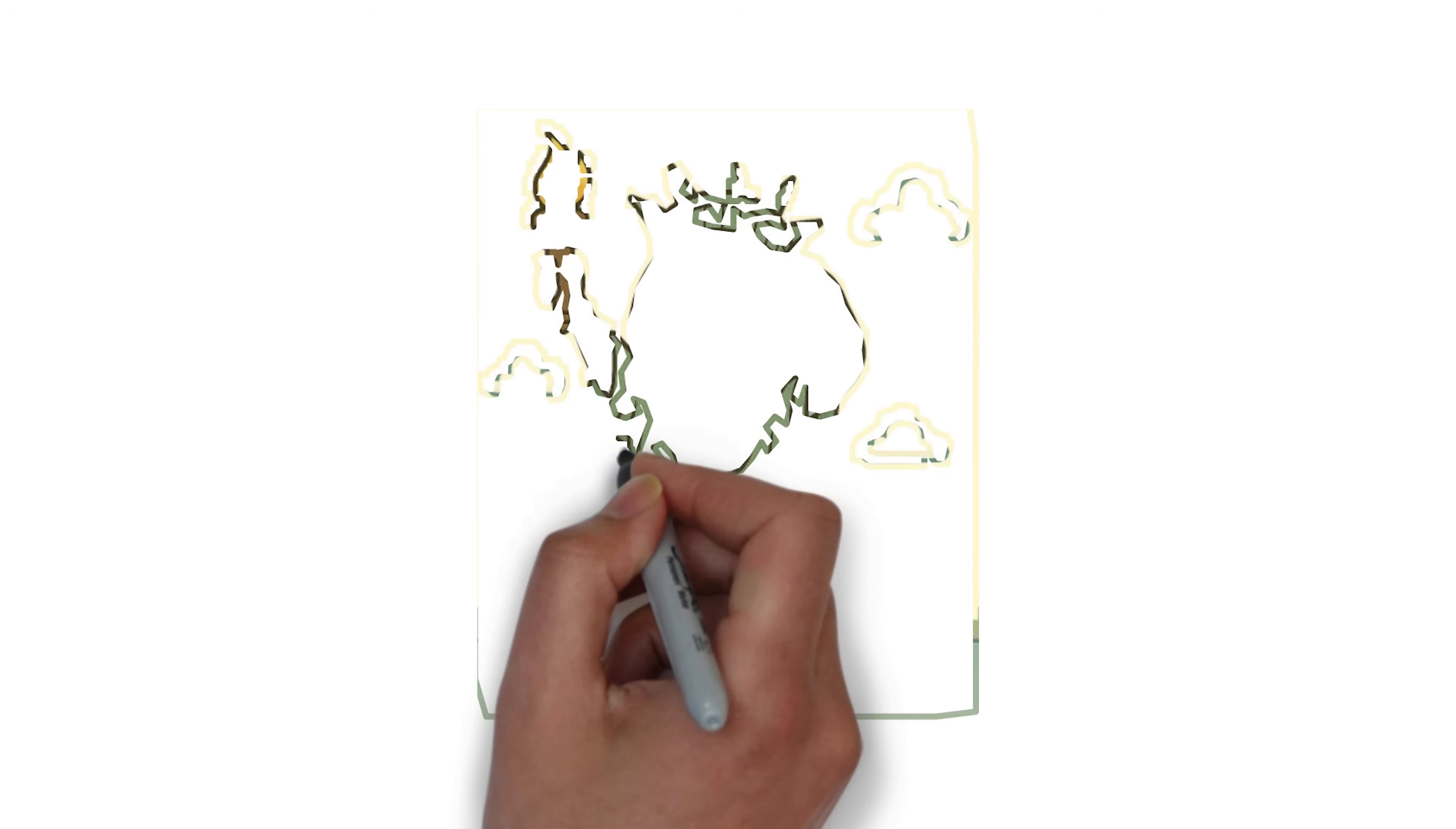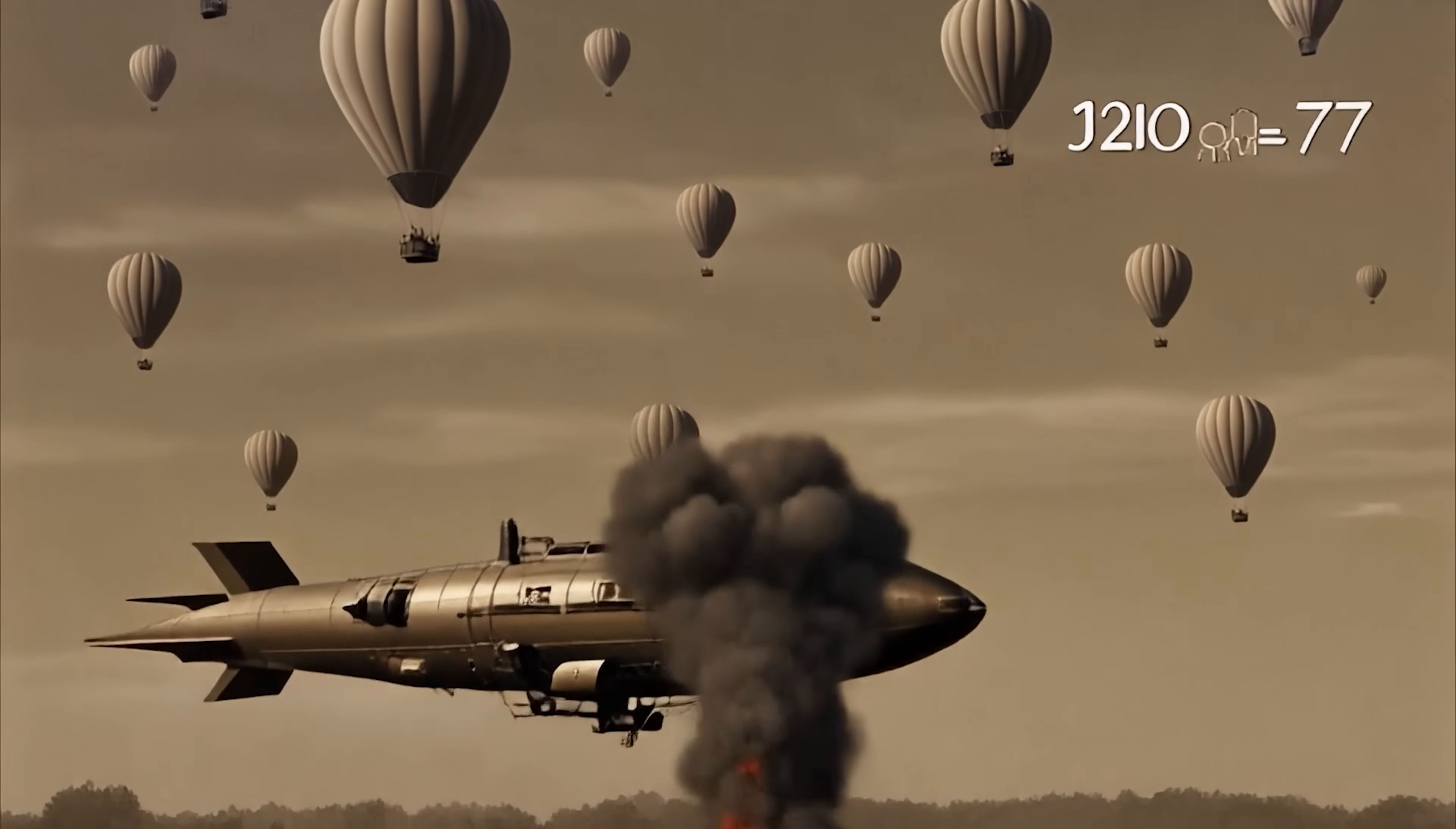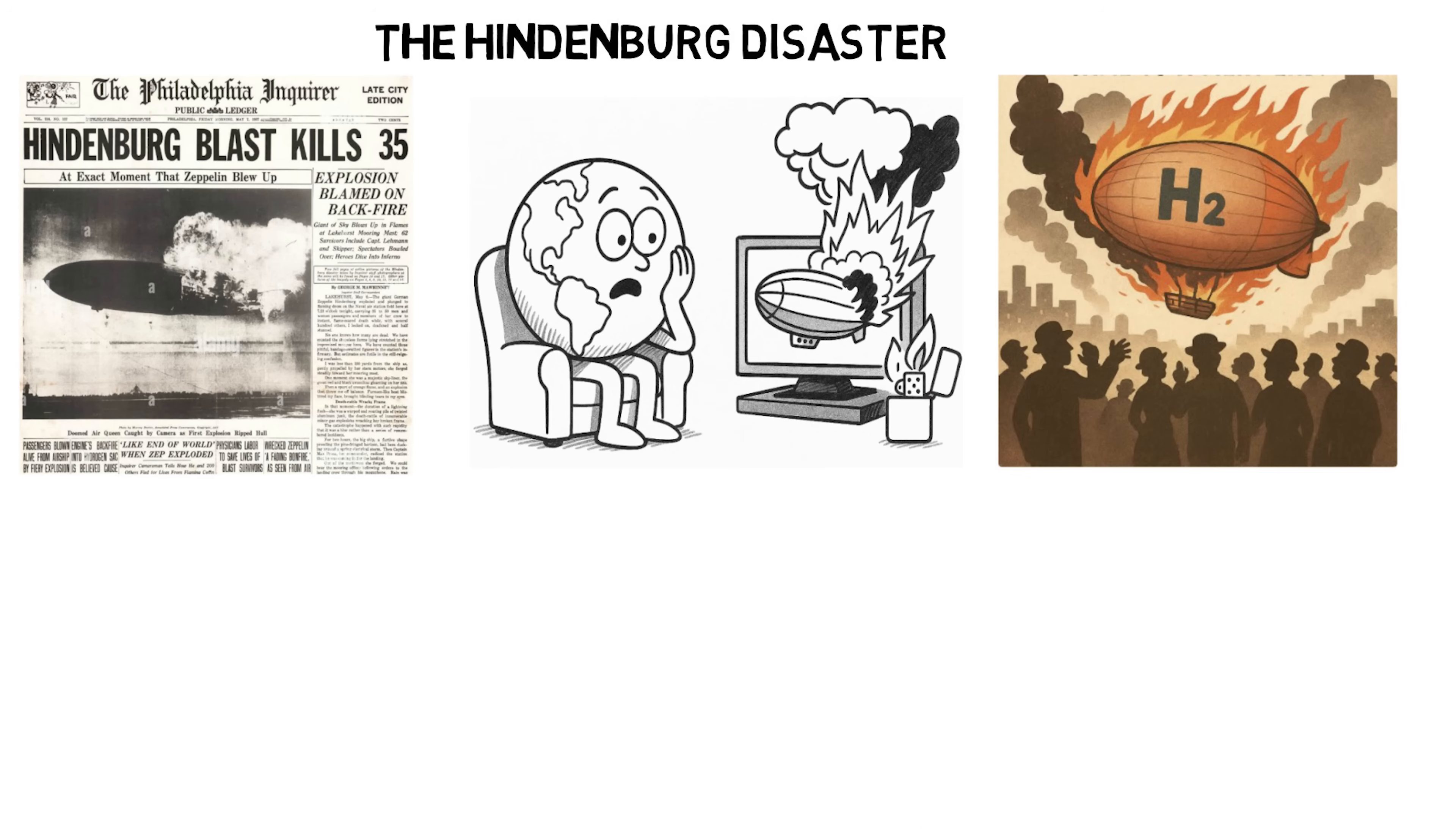Hydrogen once symbolized the future: light, buoyant, and full of promise. But in 1937, that promise turned to horror once again. As the German airship Hindenburg descended toward its landing mast, the skies above New Jersey were torn apart by fire. In mere seconds, the majestic vessel was engulfed in flames, its hydrogen-lifting gas igniting with terrifying speed. The inferno claimed 36 lives and seared itself into the collective memory of a generation. The world watched in disbelief. And with that single, catastrophic event, the age of hydrogen-filled airships came to a fiery end.